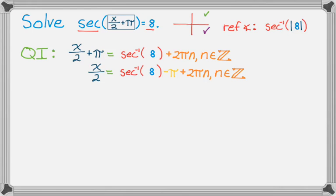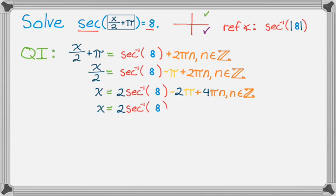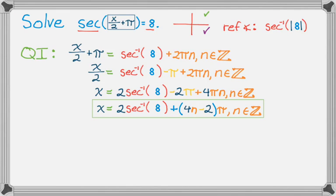I'm going to multiply through by 2. And I'll get to an answer that if I'm satisfied with it, I could stop there. But I notice that there are two π terms, so I probably want to factor that a bit. So 2 secant inverse of 8, and then plus, let's see, we got the coefficient of π now is 4n minus 2, and then π, and n is an element of the integers.